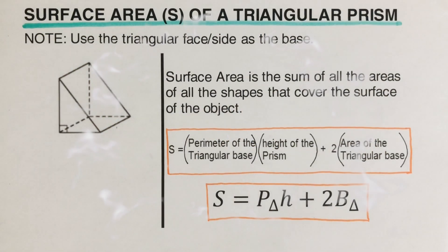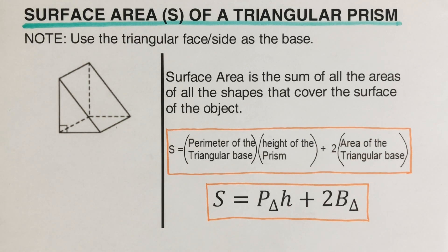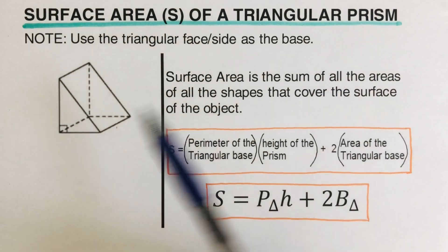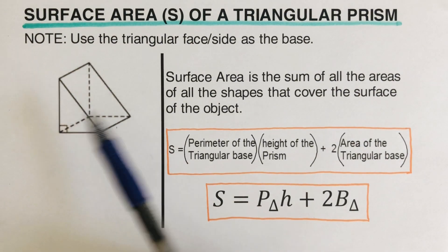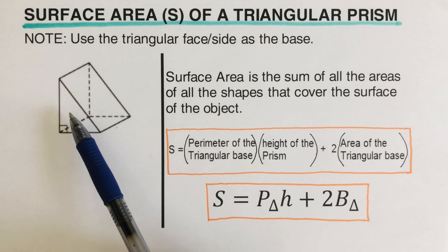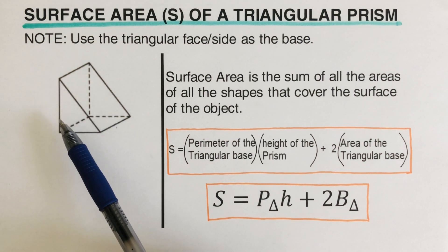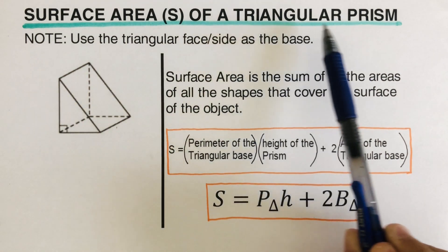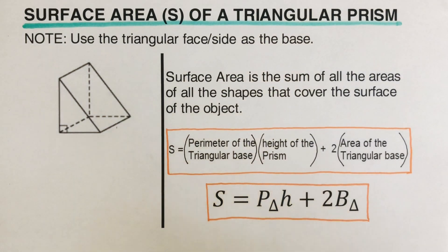Hello everyone. In this video we are going to determine the surface area of a triangular prism using two methods. Before we jump into some examples to see how these processes work, we first remember that this kind of prism is called a triangular prism because two of its faces are triangular in shape — that's how the name comes from.